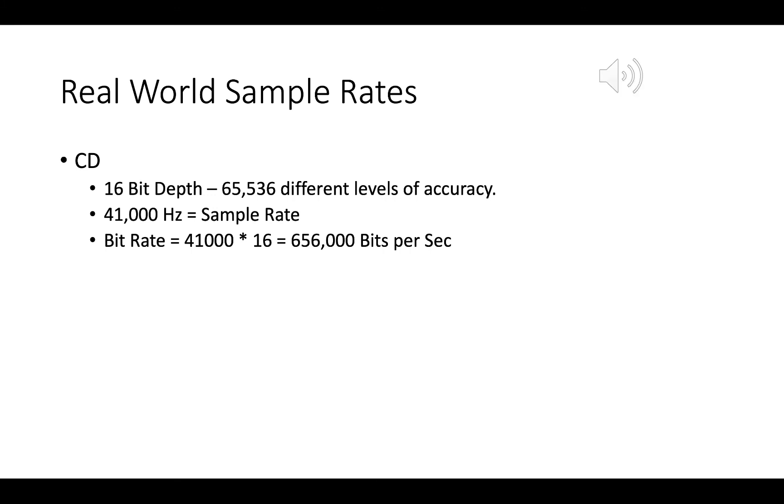So finally, I just want to give you a real-world example of sound quality. When you're listening to CD music, CDs have a bit depth of 16 bits. So each measurement can record 65,536 different levels. CD's sample rate is 41,000 hertz. So a CD gets sampled 41,000 times a second to 65,536 different levels. That means you have a bit rate of 656,000 bits per second. So for every second of music you are listening to on your Bluetooth headphones, the computer is transferring 656,000 bits for every second.